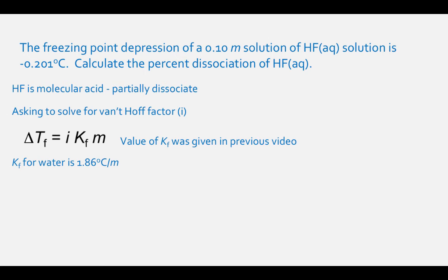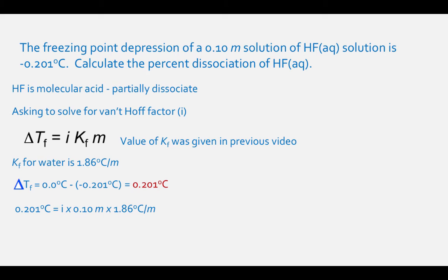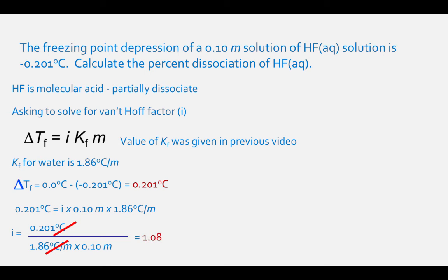The change in freezing temperature is 0.0 degrees Celsius minus negative 0.201 degrees Celsius, which equals 0.201 degrees Celsius. So 0.201 degrees Celsius equals the unknown Van't Hoff factor times 0.10 molal times 1.86 degrees Celsius per molal. The unknown Van't Hoff factor equals 0.201 divided by (1.86 times 0.10), which equals 1.08, meaning that HF is about 8% dissociated.